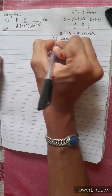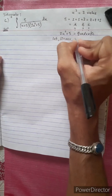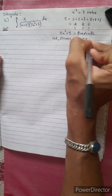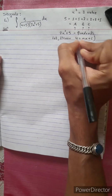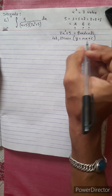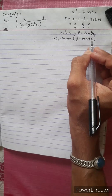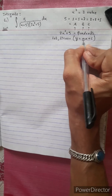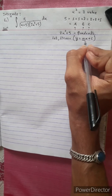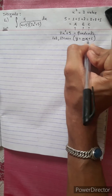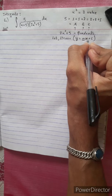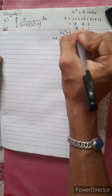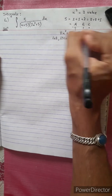A linear equation is of the form y equals mx plus c. Here, m is the slope, a constant number, and x is the coordinate variable. We have constants a, b, c.